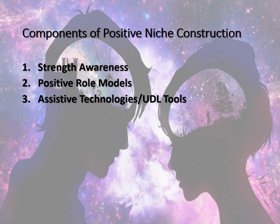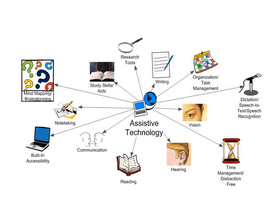Assistive technologies and universal design for learning tools can include many of the tools we've already looked at: text-to-speech apps and software, speech-to-text software, organizational apps, writing apps, mind mapping for note-taking like Inspiration, study skill apps, apps to assist in reading, time management apps, and communication apps like the Proloquo2Go app — the augmentative alternative communication device — that we featured earlier with autism.